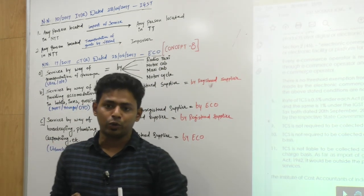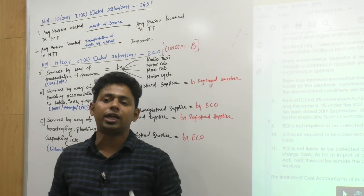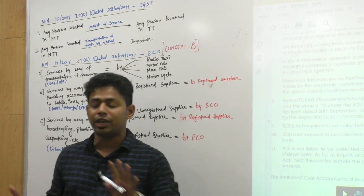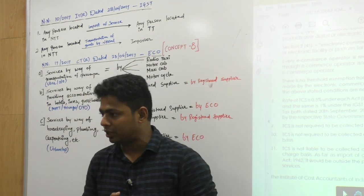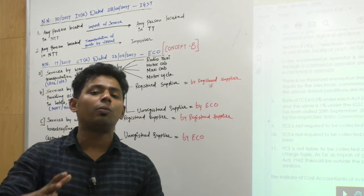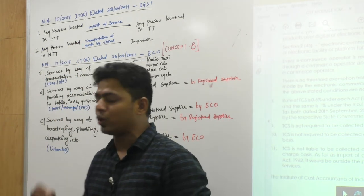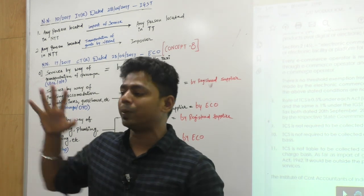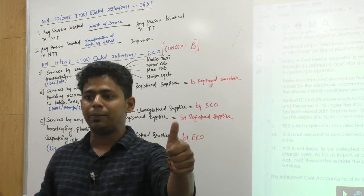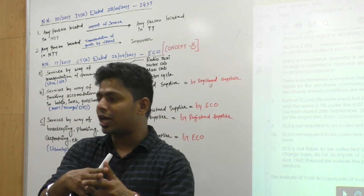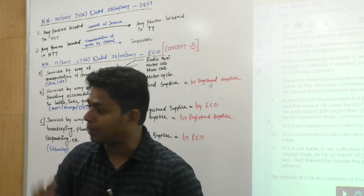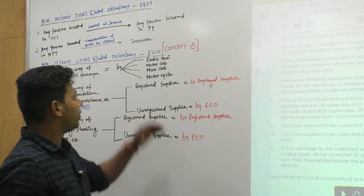Section 9(5) is about e-commerce operators. If the e-commerce operator is physically located in India, then the e-commerce operator pays tax. If the e-commerce operator is not physically located in India, then the representative of the e-commerce operator pays. If both physical presence and representative are absent, then the e-commerce operator must appoint some person to handle tax compliances. Section 9(5) is applicable only on services.